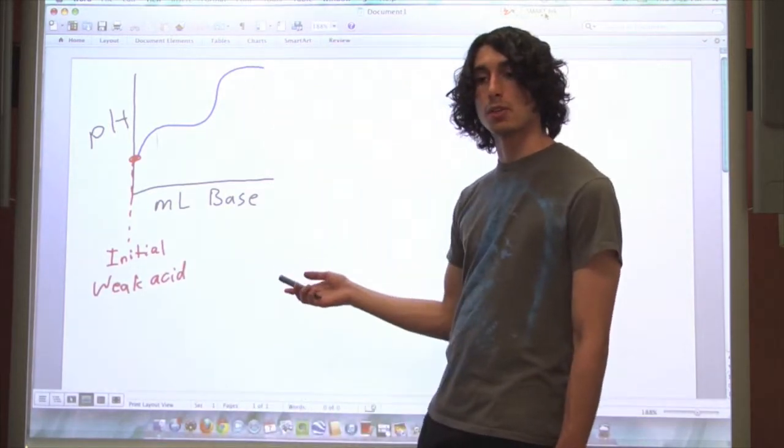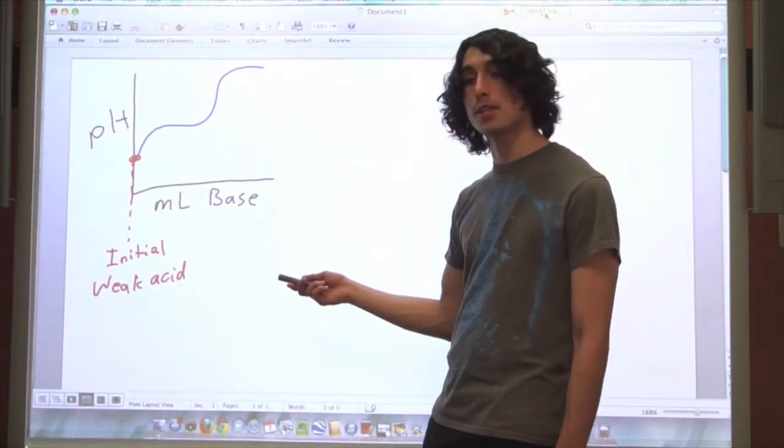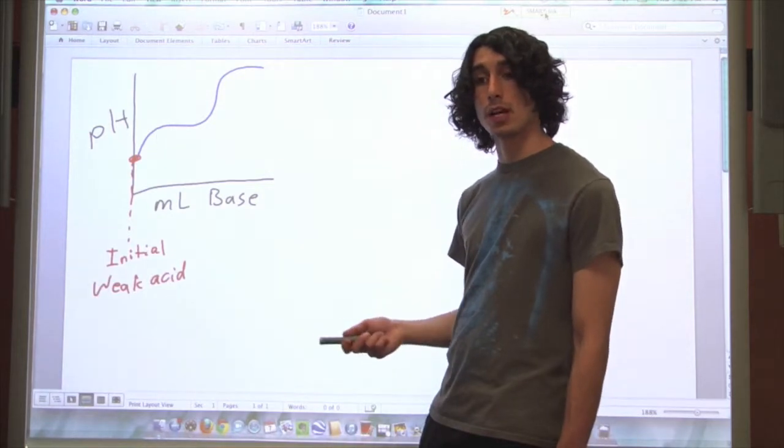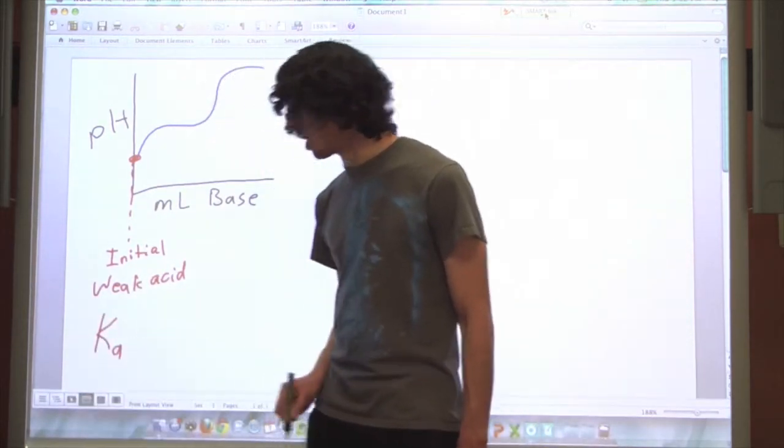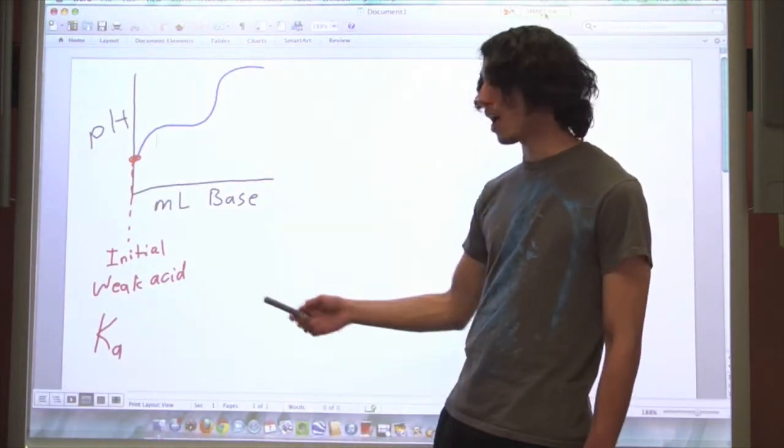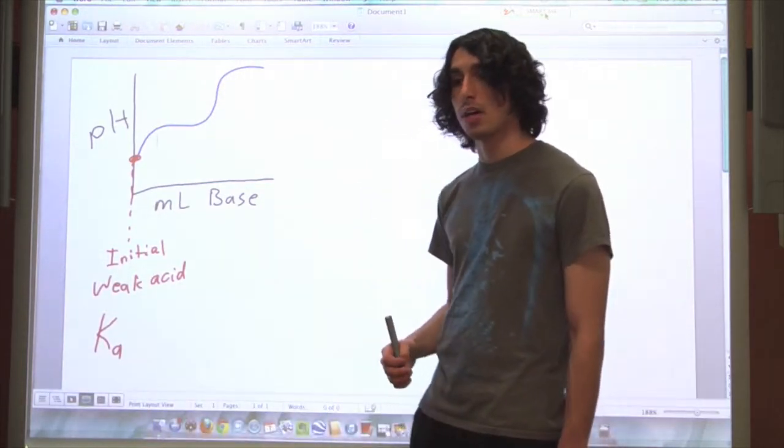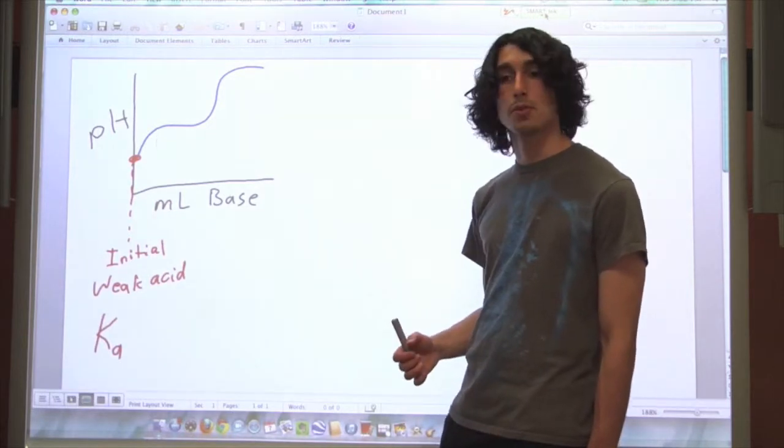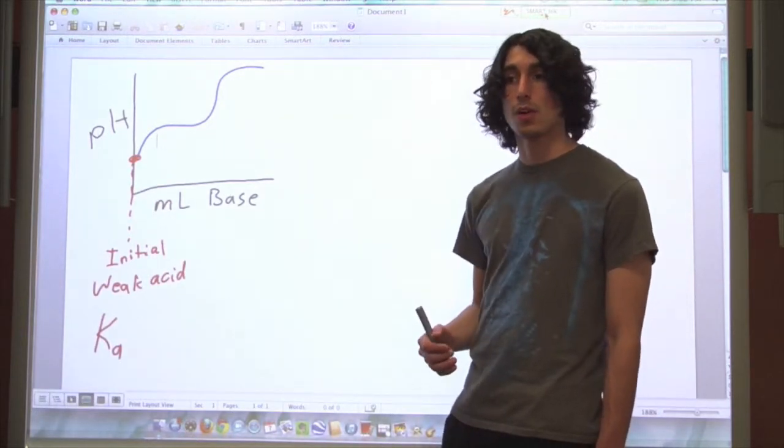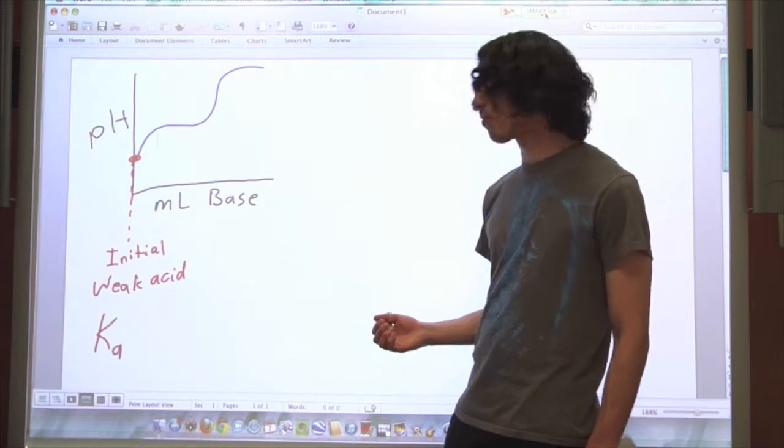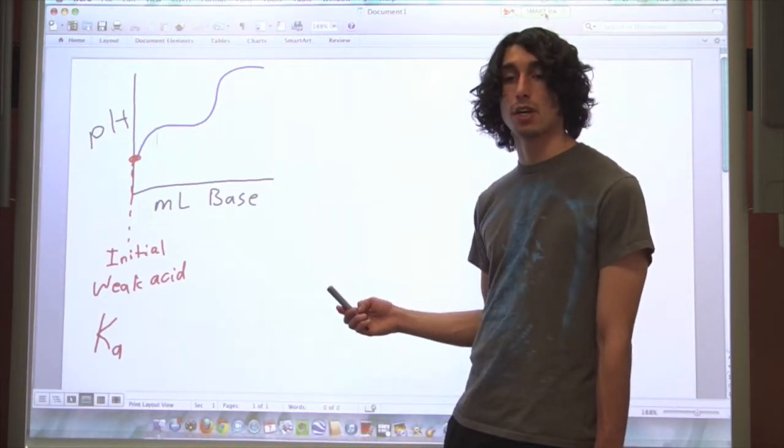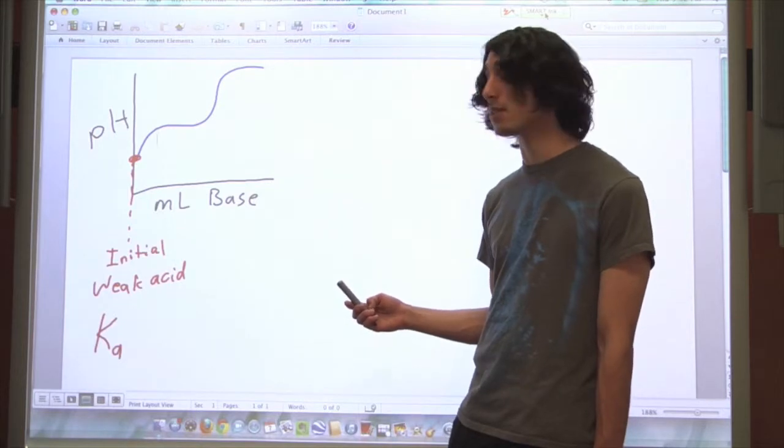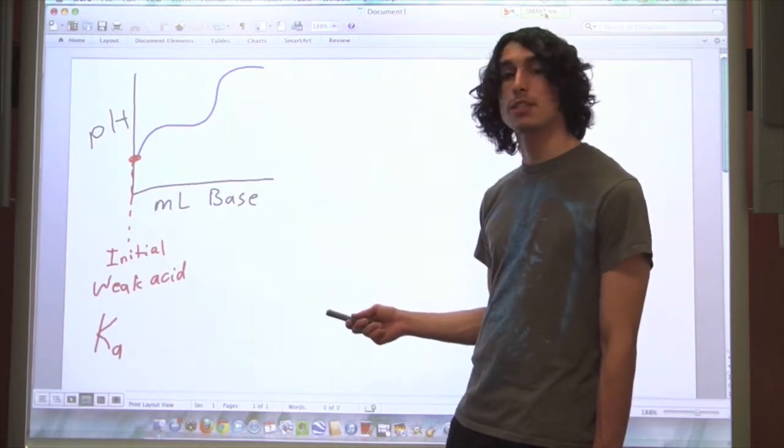Essentially all you need to do is solve a weak acid equilibrium, which you can do with an ice table and the Ka. So you set the Ka equal to the equilibrium expression, and then you use your ice table to replace the concentrations with x's. And you should be able to solve for the concentration of hydronium ions, and figure out the pH from there.